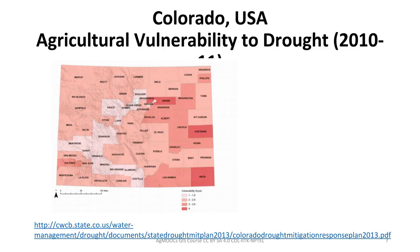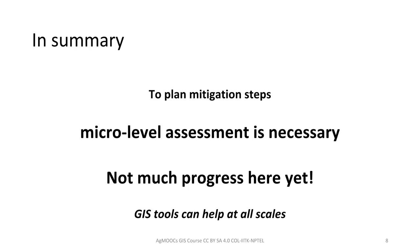You find in this map that some counties inside the state are not as vulnerable as many others. In other words, there is a noticeable variation in vulnerability to drought. That is clear only when you scale down — when you go from a macro scale to a semi-macro scale. We understood that to plan mitigation steps, micro-level assessment is necessary, and that there has not been much progress in this area.